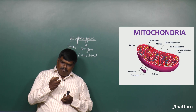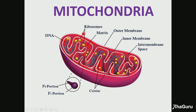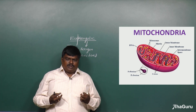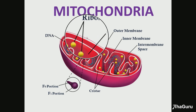Now let us learn about the typical structure of mitochondria and its important functions. In cells there are thousands and thousands of mitochondria throughout our body, because we need that much energy. Mitochondria is a double membrane cell organelle present in organisms.